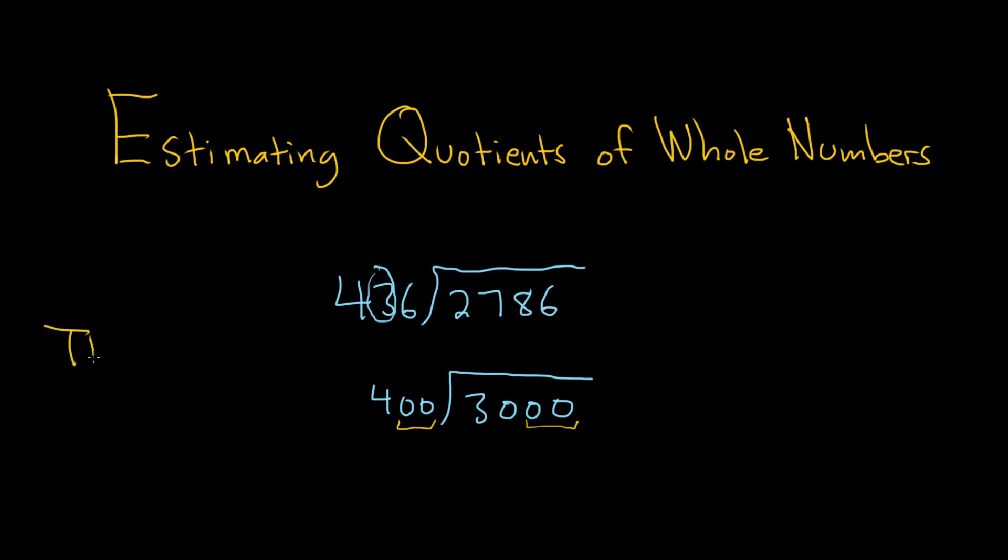So you want to think, 4 going into 30. Well, 7 times 4 is 28, so it's roughly 7. So the answer here is about 7. You just put a 7 here, and that's the answer. It's just an estimation.